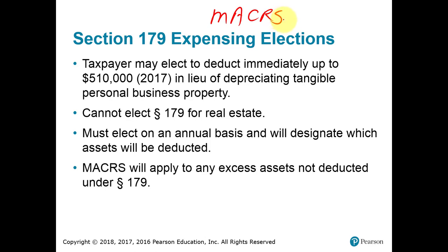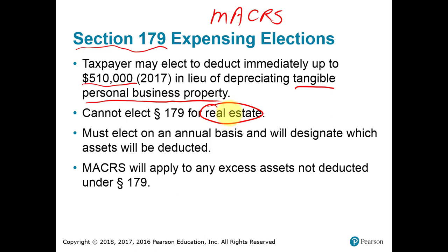If you want to claim even more deductions in the first year you place an asset into service, you may want to use the Section 179 deduction. Up to $510,000 of tangible personal business property can be deducted in the year you place it in service. You cannot deduct real estate or intangibles. The dollar amount for 2017 is up to $510,000, but we'll see a phase-out of this amount on the next slide.